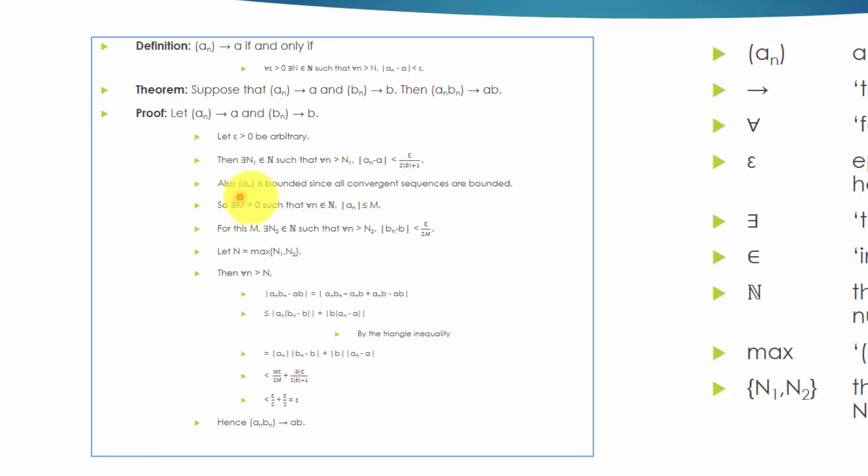Also, sequence A-N is bounded, since all convergent sequences are bounded, so there exists a number big M greater than 0, such that for all small n in the natural number set big N, the absolute value of A-N is less than or equal to big M.